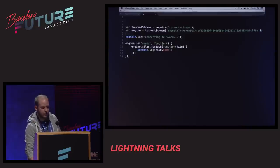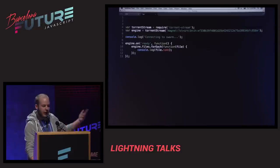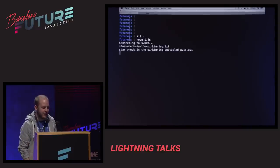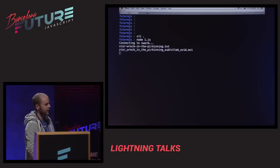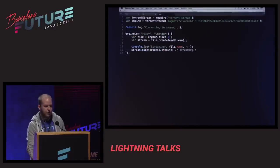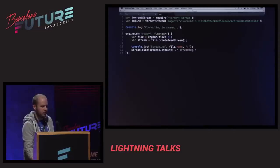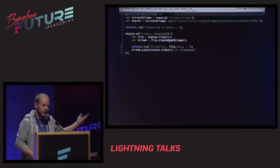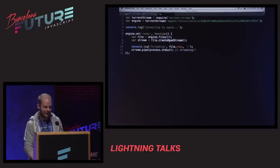You basically just call Torrent Stream with a magnet link, and when the swarm is ready — when it has the actual torrent — it will print out the files in the torrent. So this is Star Trek Fan Fiction. It has two files: a text file and an AV file. What if we tried to stream the text file to standard out? We just do this by calling a readstream on the file, and even though we haven't downloaded anything, it will just start streaming to standard out.